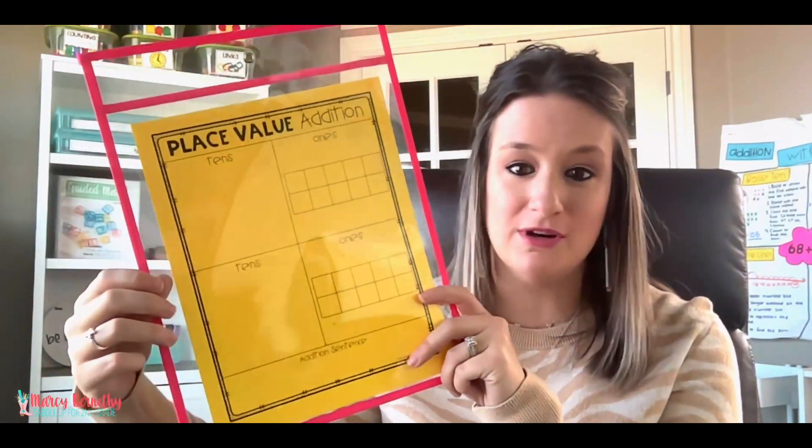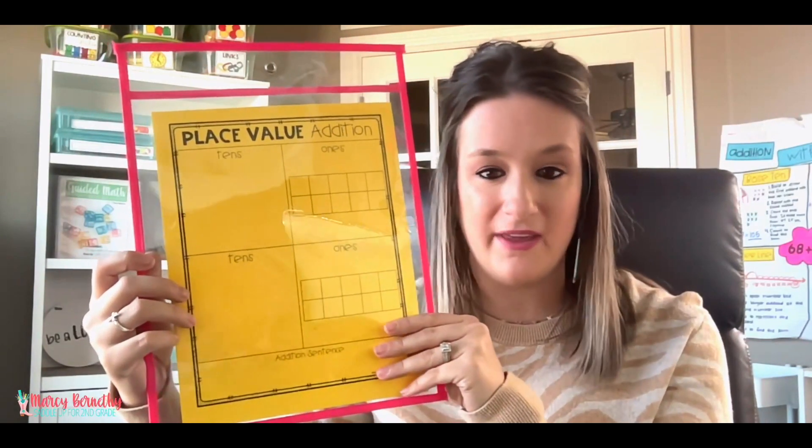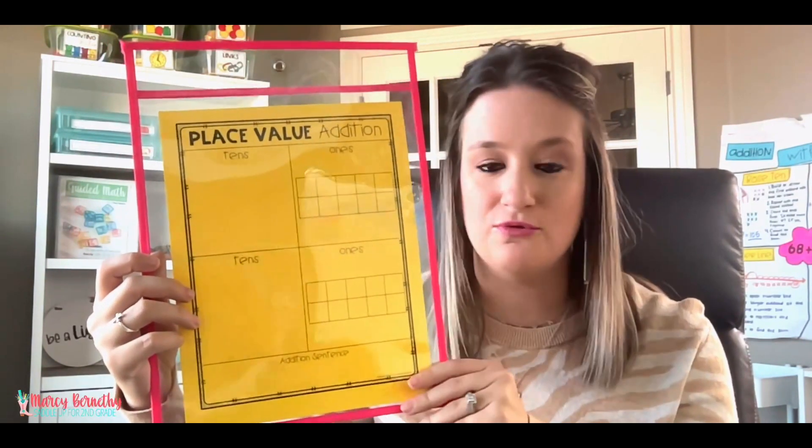So for example, the number 15, you could have them build the number 15 using ones, and then we can model and show them how 10 ones can be exchanged for a tens block, and then you have one ten and five ones. After a quick refresh of place value, it's time to introduce regrouping. So to provide my students with even more support when first introducing this strategy, I actually give them a copy of this place value addition work mat. I place it inside of a dry erase sleeve so that way they can use a dry erase marker to solve their problems.